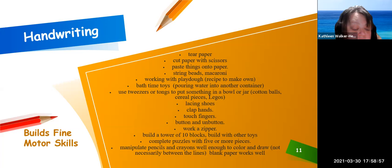Build a tower of ten blocks, build with other toys, complete puzzles with five or more pieces, manipulate pencils and crayons well enough to color and draw—not necessarily between the lines. Blank paper works well. Stop this video and do some fine motor activities with your child.